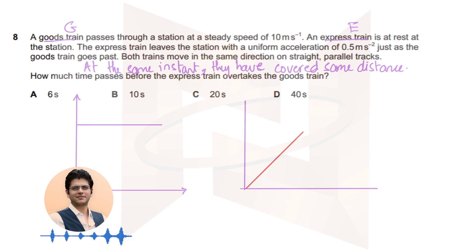How much time passes before the express train overtakes the goods train? So that means they have both traveled the same amount of distance. So this is your express train, this is your goods train. And the area under the graph, at the same instant, they should have the same amount of distance, because they would have covered the same distance.